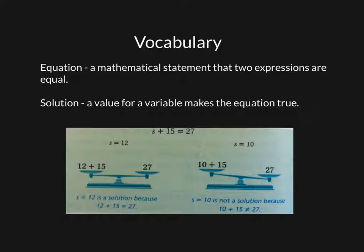Alright, so let's go over our vocabulary. As always, please make sure you write your vocabulary into your notebook. Here we go. An equation is a mathematical statement in which two expressions are equal. Therefore it has an equal sign. We've been talking about expressions for a while, and we know expressions do not have an equal sign, but an equation does.